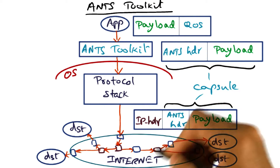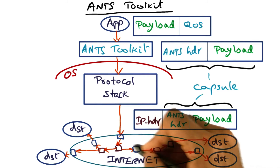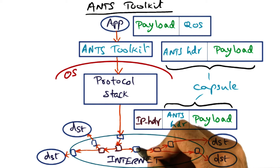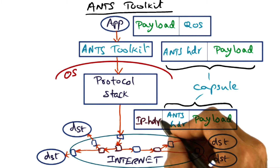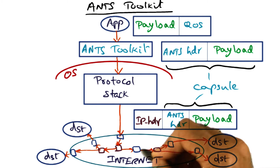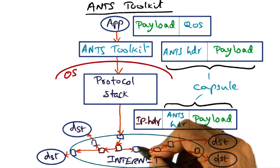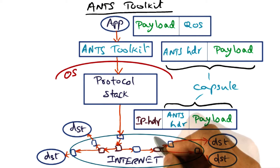This is what traverses the network. When it traverses the network, if a node in the network is a normal node — meaning it is not a smart node but a normal IP router — then it simply uses the IP header to determine what to do in terms of sending the packet to the next hop towards the destination.